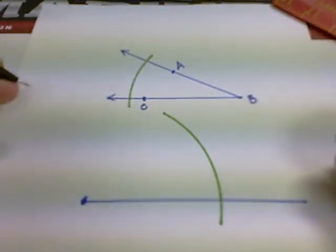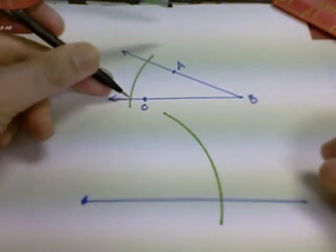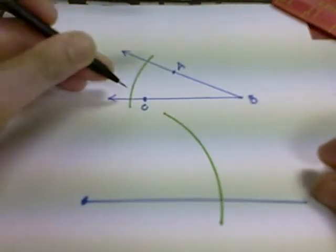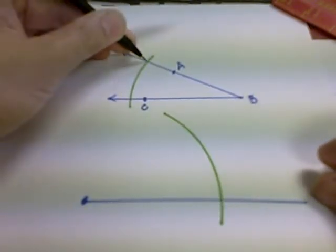The next thing we're going to do is open the compass the distance across the angle where the arc intersects both rays.